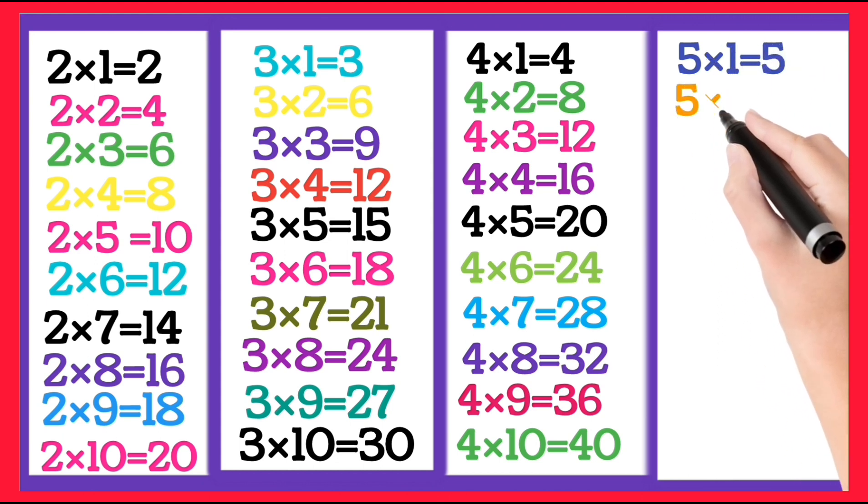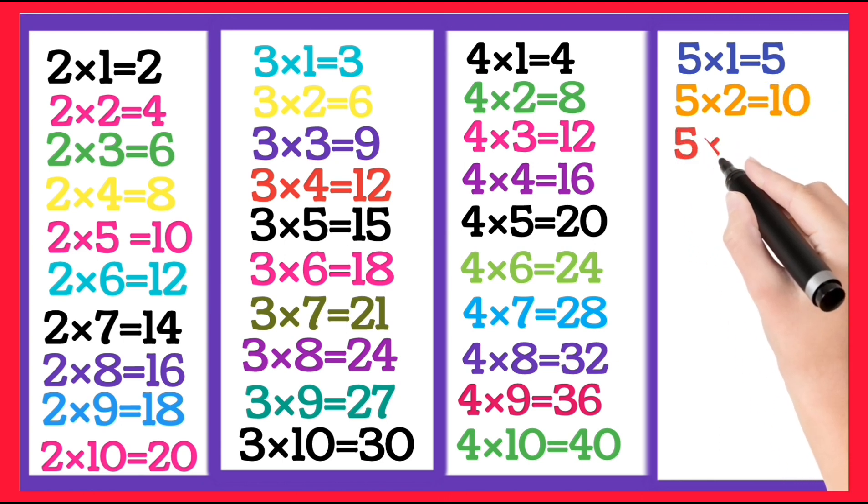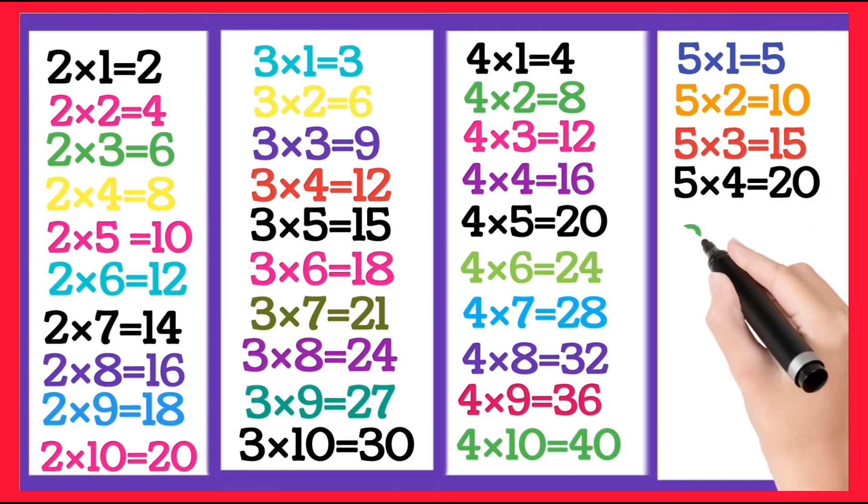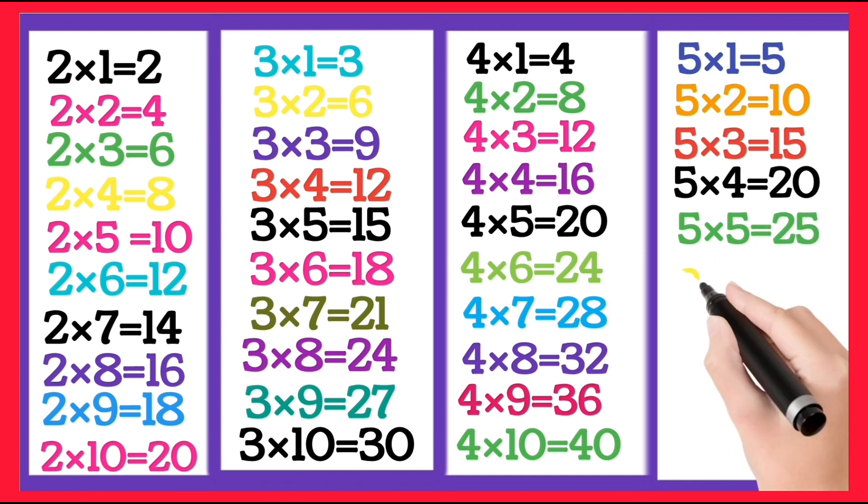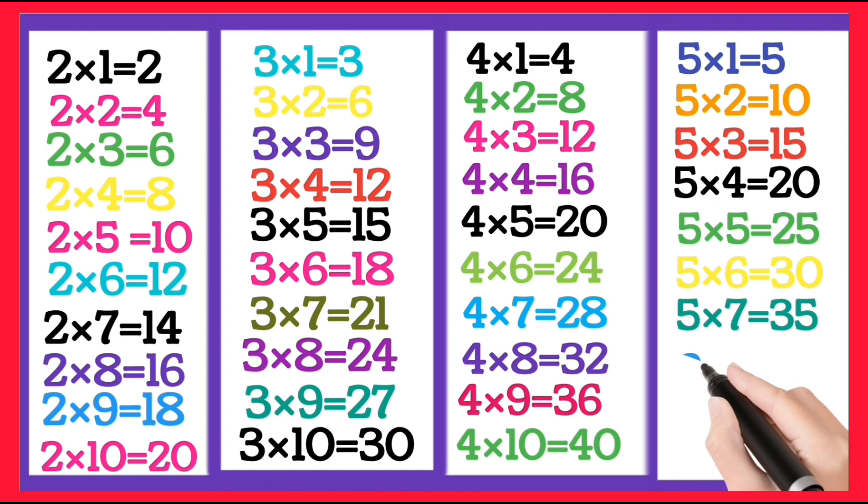5 1's are 5, 5 2's are 10, 5 3's are 15, 5 4's are 20, 5 5's are 25, 5 6's are 30, 5 7's are 35, 5 8's are 40.